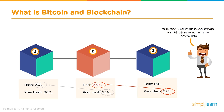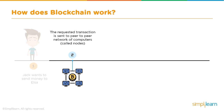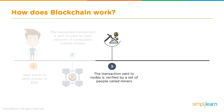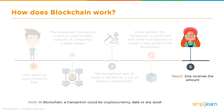How does blockchain work? Jack wants to send money to Elsa. The transaction is sent to all peer nodes on the network. Miners verify the transaction, then combine it with other transactions to create a new block. As a result, Elsa receives the amount. A blockchain transaction can be for cryptocurrency, data, or any kind of digital asset which holds value on the network.